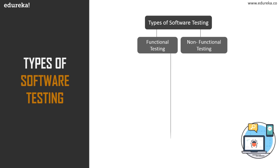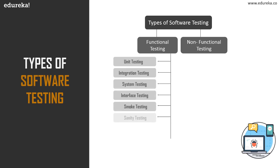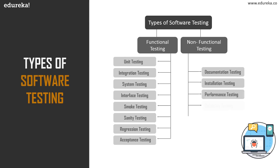Software testing is mainly divided into functional testing and non-functional testing. Functional testing verifies that each function of the software application operates in conformance with requirement specifications. Non-functional testing determines the performance of the system — measuring, validating, and verifying quality. Under functional testing we have unit testing, integration testing, system testing, and others — including sanity testing. Under non-functional testing we have documentation testing, security testing, performance testing, and many others.